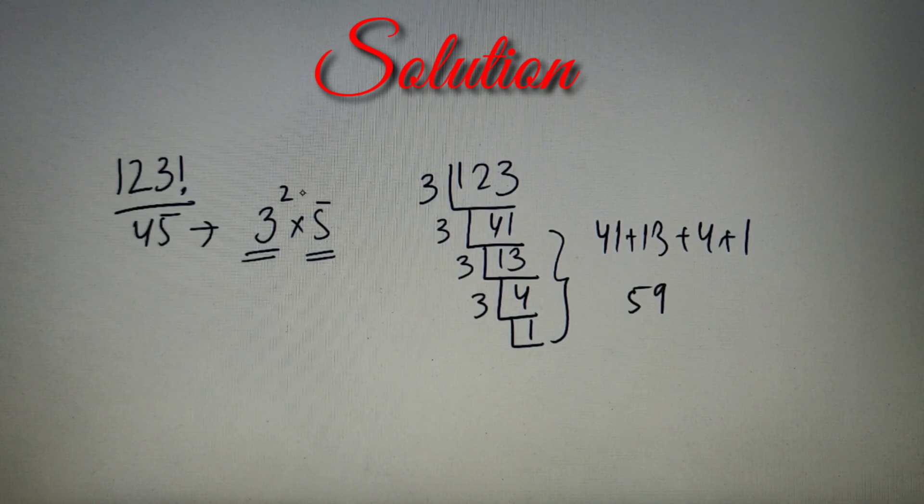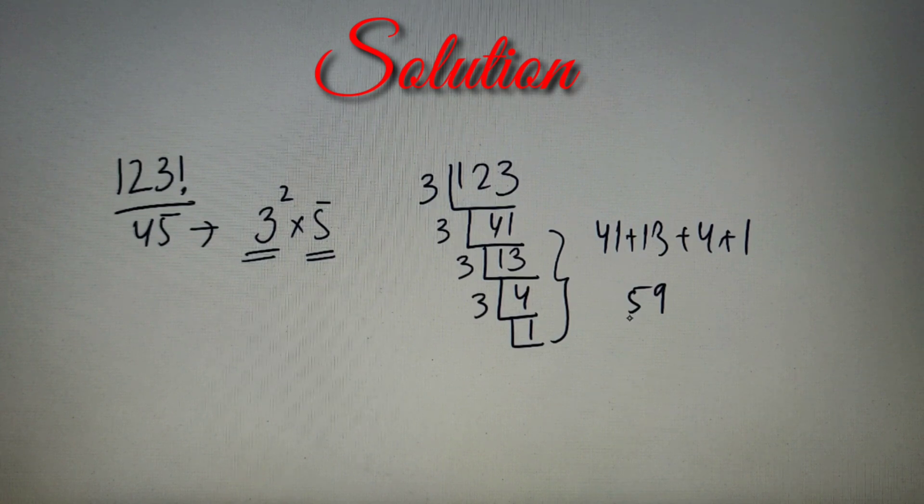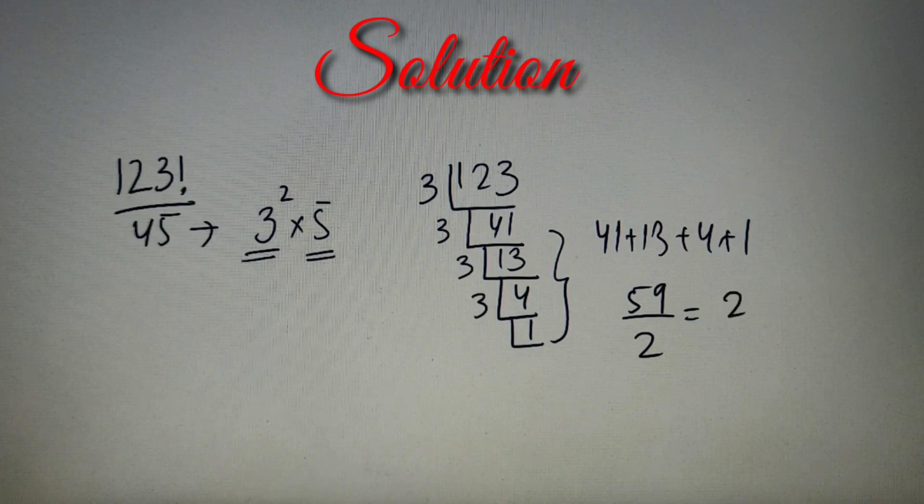Now we have to divide it by 2 because it is raised to a power of 2, so we'll get 59 by 2. It will give us 29.5, so we'll take 29.